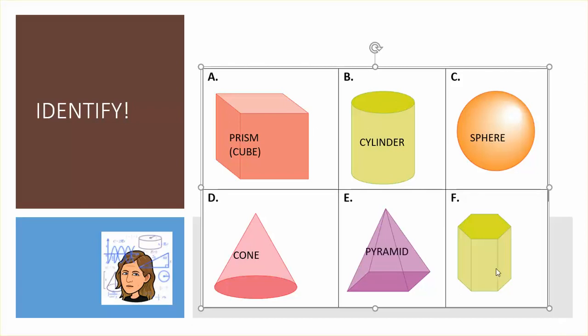And finally F. F has these hexagons on the top and then they'd be on the bottom. All the sides are rectangles. So that means it's a kind of box or a prism.